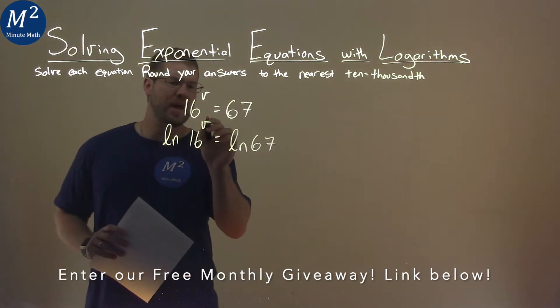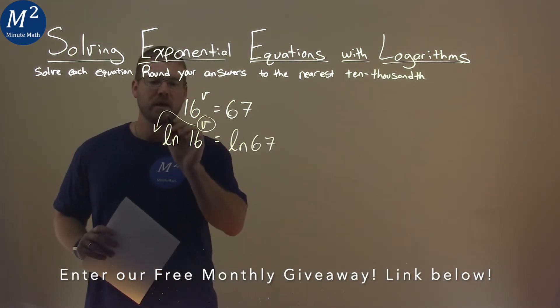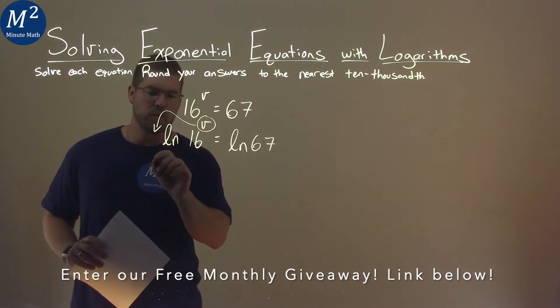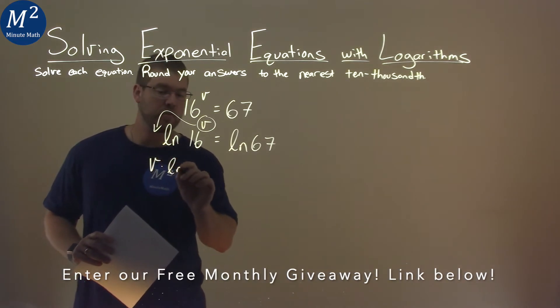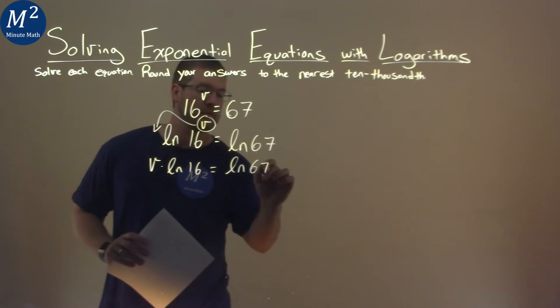When I do that, this exponent of a power of v can come out front. So we're left now with v times natural log of 16 equals natural log of 67.